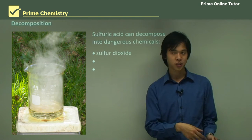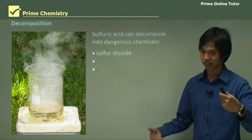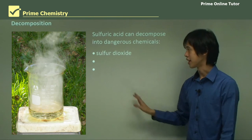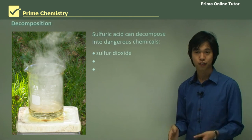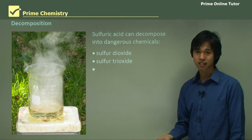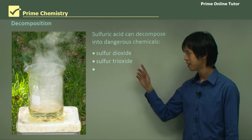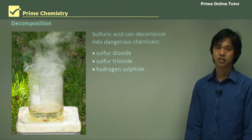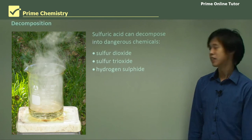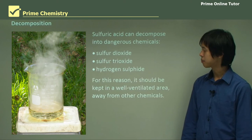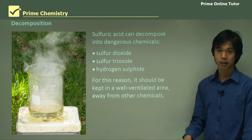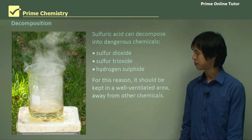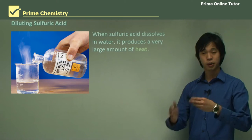Now that we've covered storage, protection, and accident response, what are the potential issues when we actually use sulfuric acid? Sulfuric acid can decompose into other dangerous chemicals like sulfur dioxide, and you don't want to breathe sulfur dioxide in because it can form sulfurous acid in your lungs. It can also form sulfur trioxide, which would form sulfuric acid in your lungs, which is again very bad. It can also produce hydrogen sulfide — that rotten egg smell — which isn't dangerous but isn't pleasant. For this reason it should be kept in a well-ventilated area, in a fume cupboard, away from other chemicals.